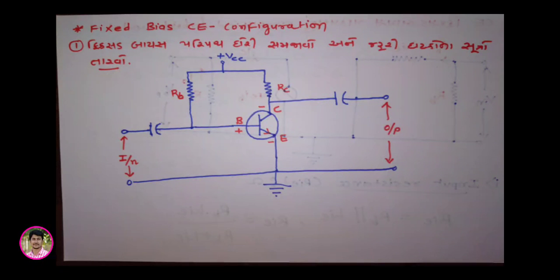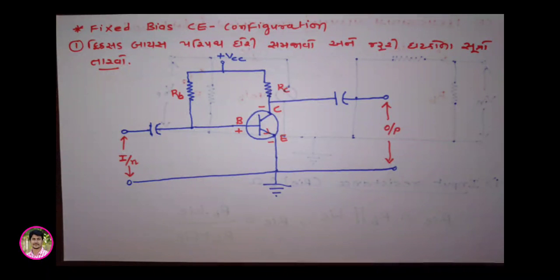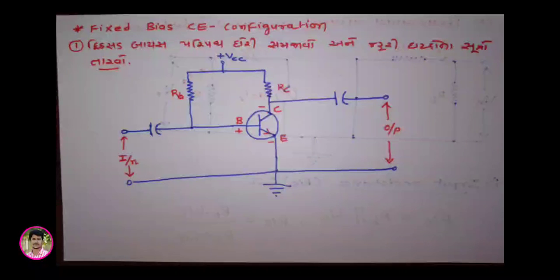In the Fixed Bias circuit, we will draw its diagram, then understand the components present in it, and look at what quantities are given inside it. We will take a little information about the conditions we had previously studied, and then discuss how to draw the hybrid model going forward.